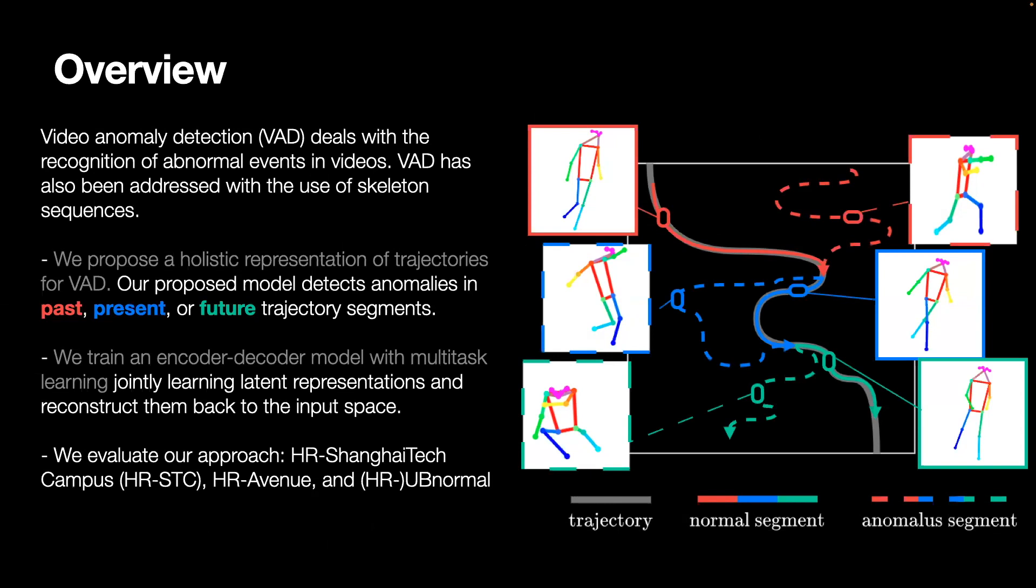Instead of the recognition of anomalies only at a specific temporal location, we propose a holistic representation of trajectories. We show that modeling anomalies over the past, present, and future can lead to strong representations that can enable learning expected actions and behaviors in skeleton trajectories.